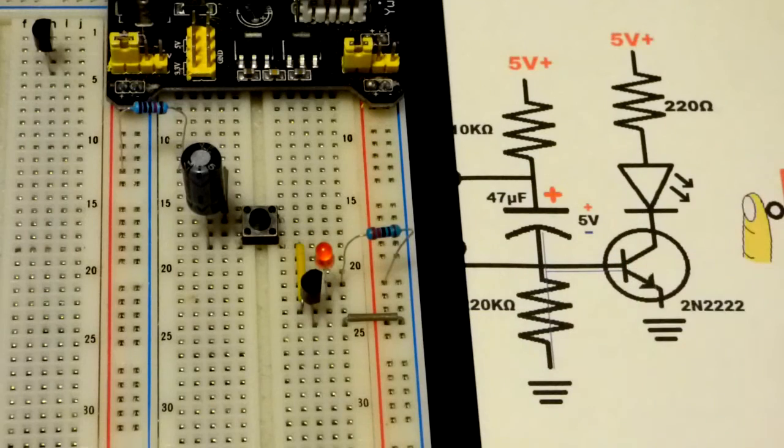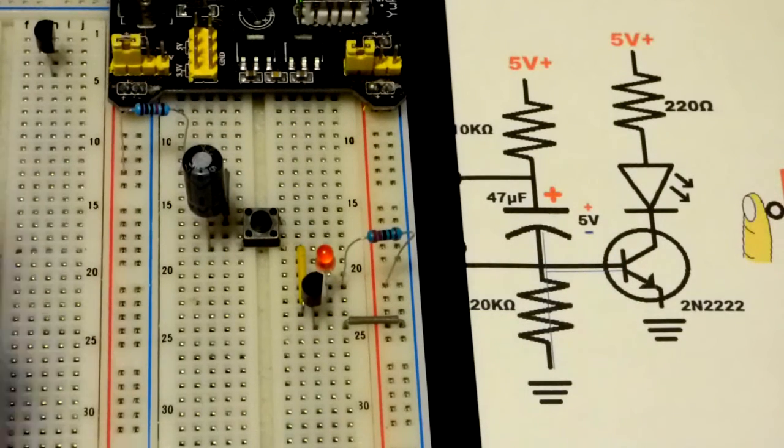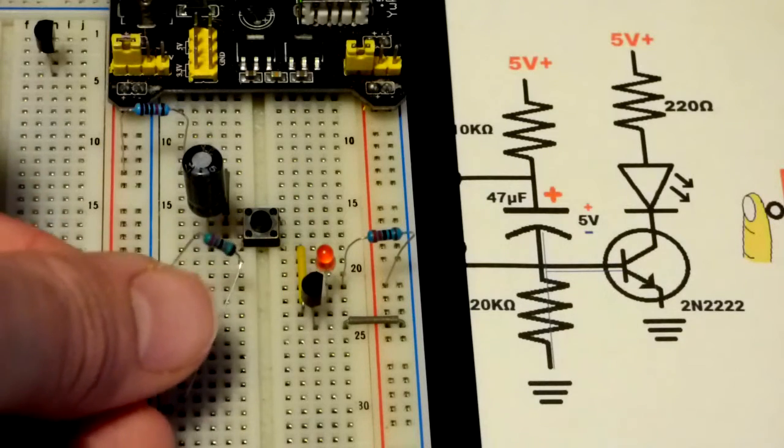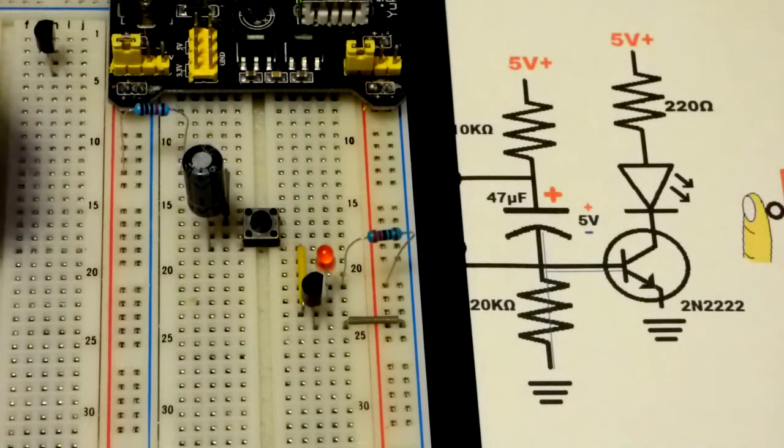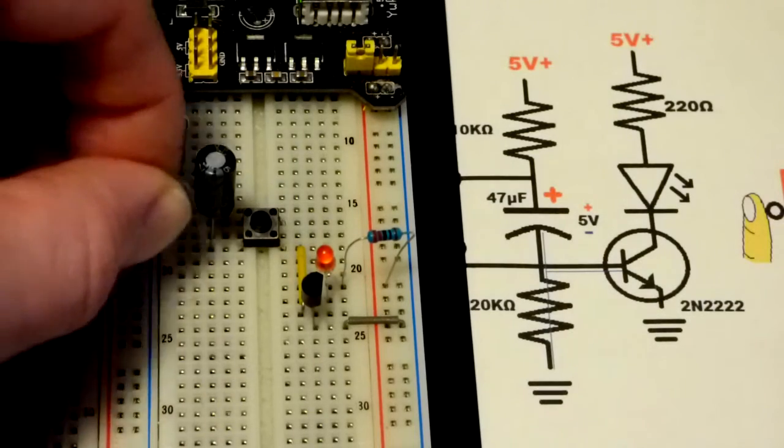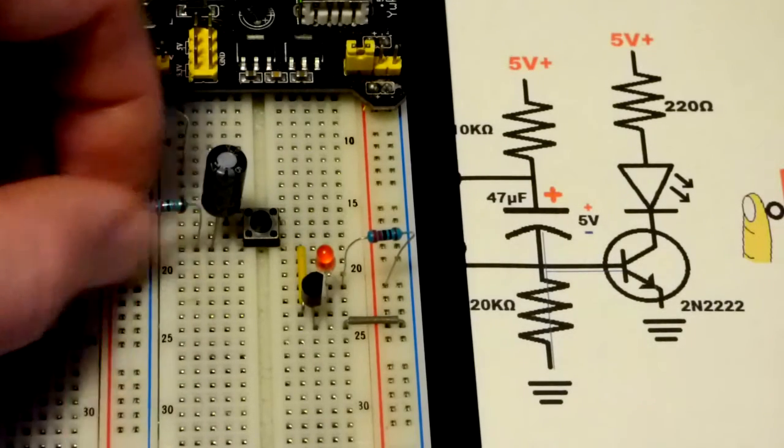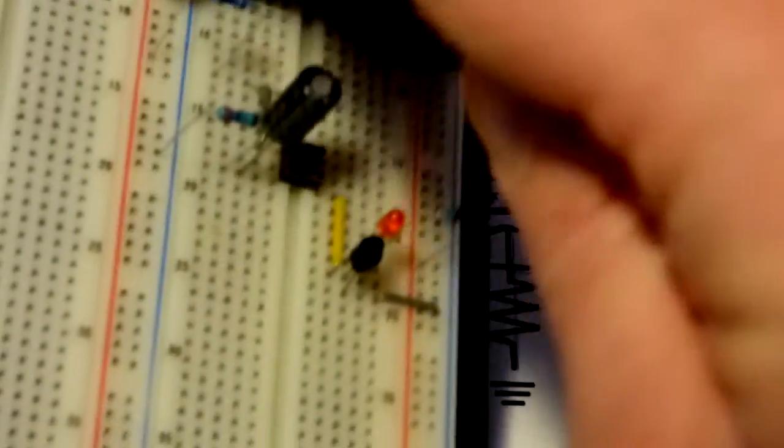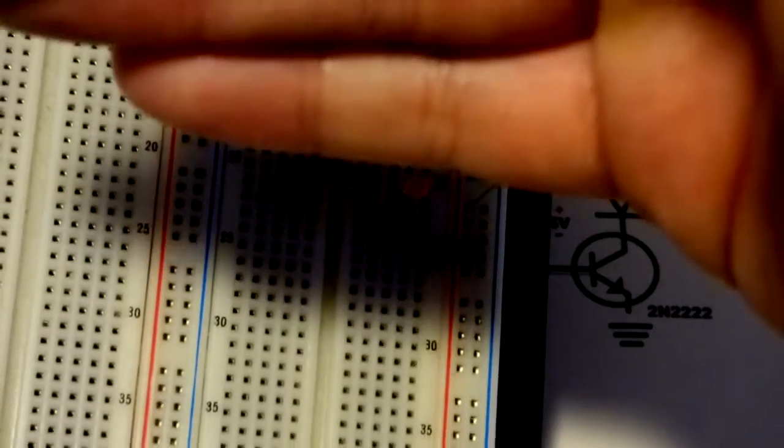So it's taking whatever tiny bit of current, very little bit, and letting a multiple amount, probably about 300 times as much current from collector to emitter. So a tiny bit of current is going through the LED and lighting it up.